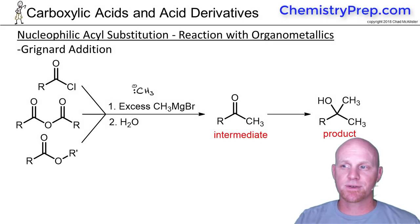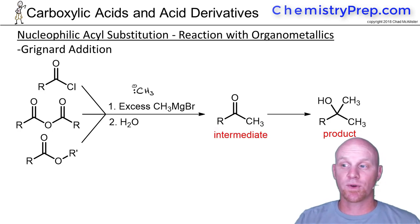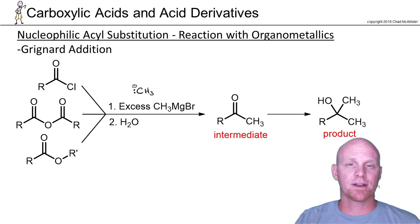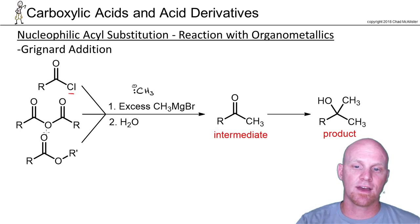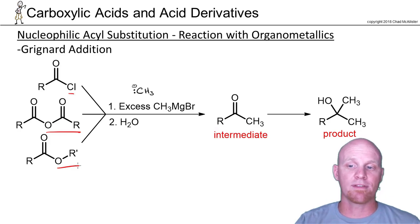The first nucleophilic acyl substitution reaction is with Grignard reagents, or organometallics in general. We saw that Grignard reagents do nucleophilic addition with both ketones and aldehydes. With acid chlorides, acid anhydrides, and esters, the reaction is a little bit different — we can actually add two equivalents rather than just one.